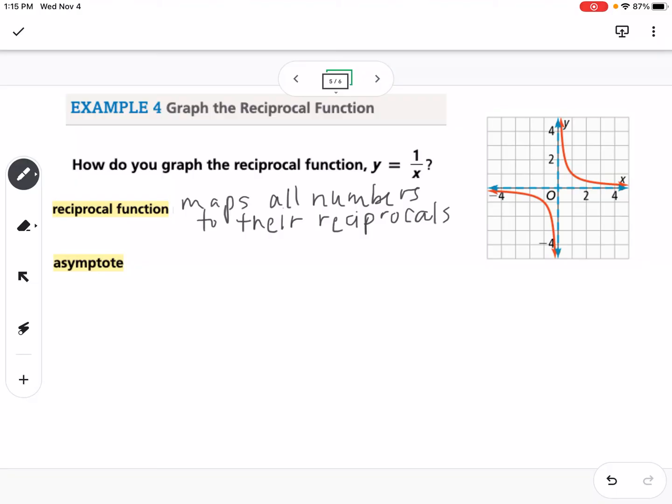With reciprocal functions and rational functions in general, we have what's called asymptotes. An asymptote is a line that the graph approaches and guides the end behavior.